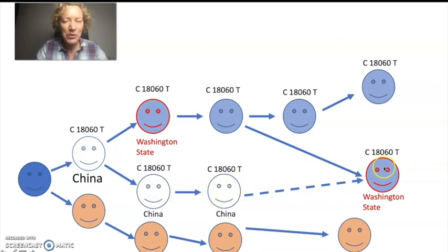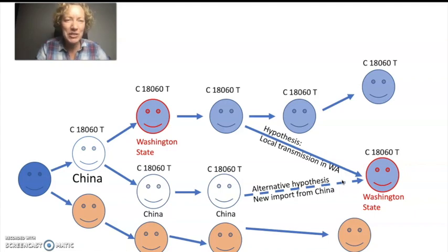So in principle, they could have been infected by someone in China, right? It could have been a new import from China. So now we have two hypotheses. One is, I would say the alternative hypothesis is that this is a new import from China. And the original hypothesis, which is favored by Trevor Bedford, is that there is local transmission in Washington. And that's why these two samples both have the same mutation. I think that the local transmission in Washington hypothesis is much more likely.